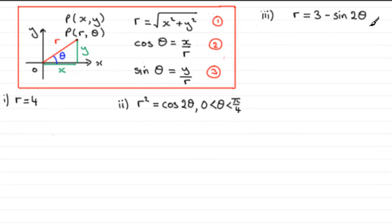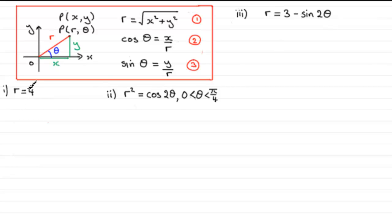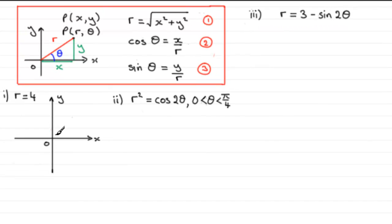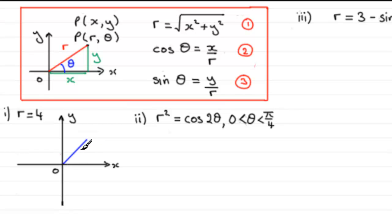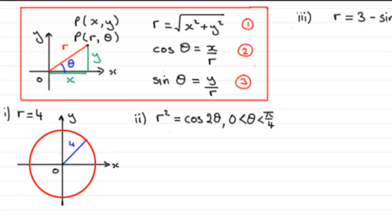For the first example — a nice easy one — r equals four. If we draw Cartesian axes, the distance from the origin to any point is going to be four units. This point could be anywhere four units away from the origin, so that describes a circle. This generates a circle of radius four with the centre at the origin.